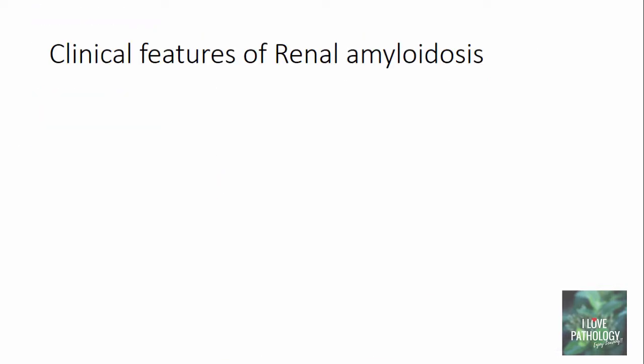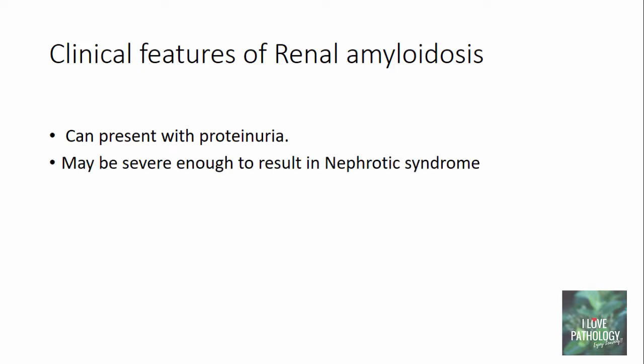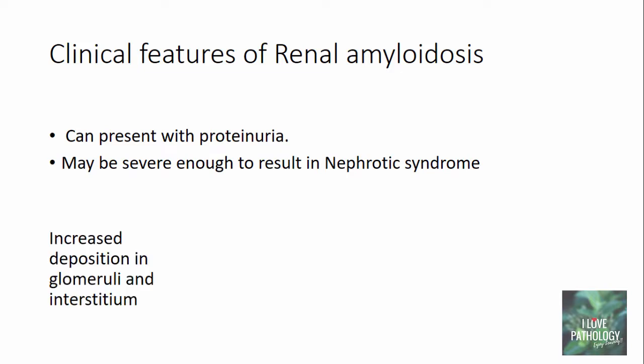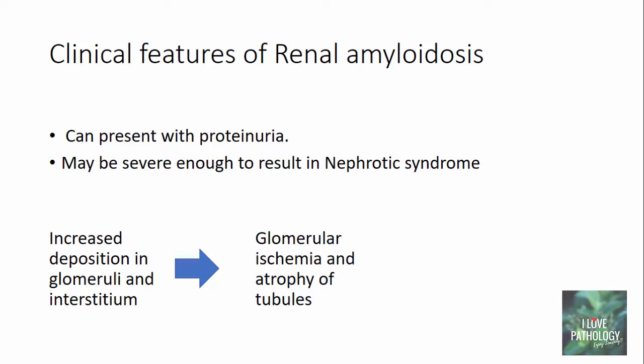The clinical features of renal amyloidosis include proteinuria, which can be so severe it manifests as nephrotic syndrome. Increased deposition of amyloid in the glomeruli and interstitium results in ischemia of glomeruli and atrophy of tubules, and eventually may lead to chronic renal failure.